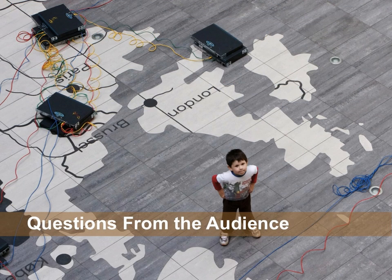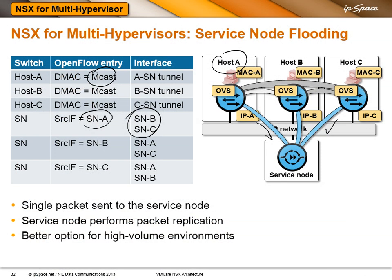A very relevant question: is the service node an appliance? Yes, today it has to be an appliance. Are there any plans to turn service nodes into VMs? I'm not aware of any plans to do that. What determines the switching point between head-end replication and service node replication? You configure it manually. The only thing you have to configure is the replication type — whether you want to do it through service node or on the source node — and you have to configure the number of service nodes in the system. The controller automatically handles allocation and association of logical networks with different service nodes.